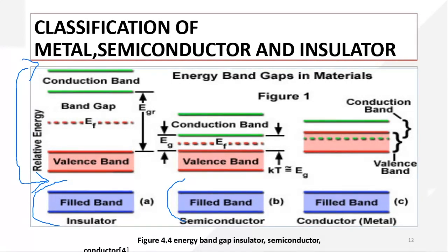In the case of metals, the conduction band and the valence band are overlapping with each other — there is no gap between them. So electrons are free to move, and that is why metals are good conductors of electricity.